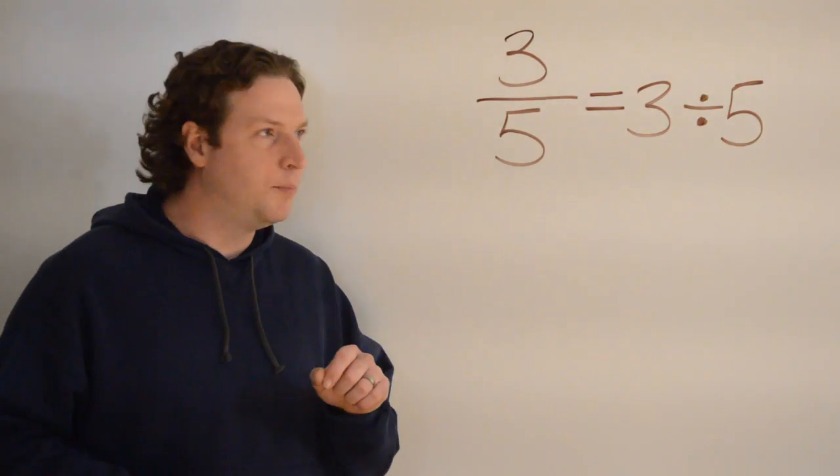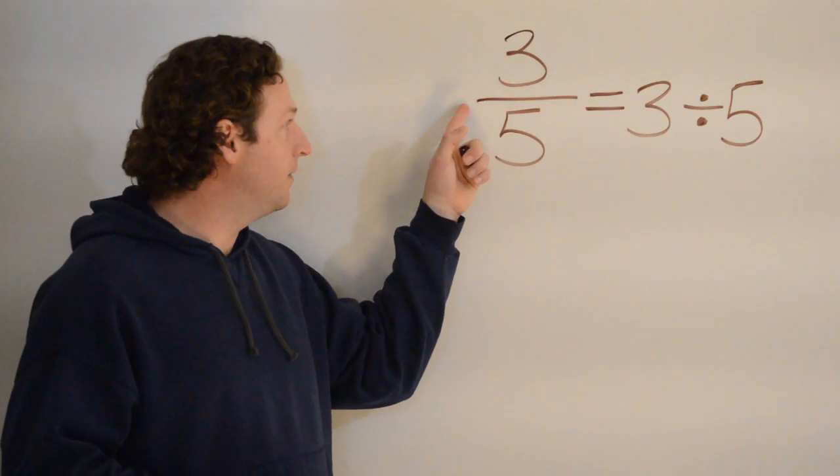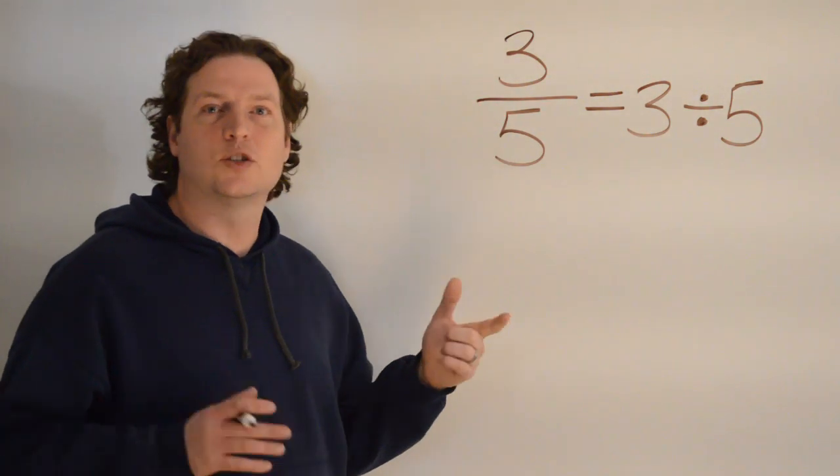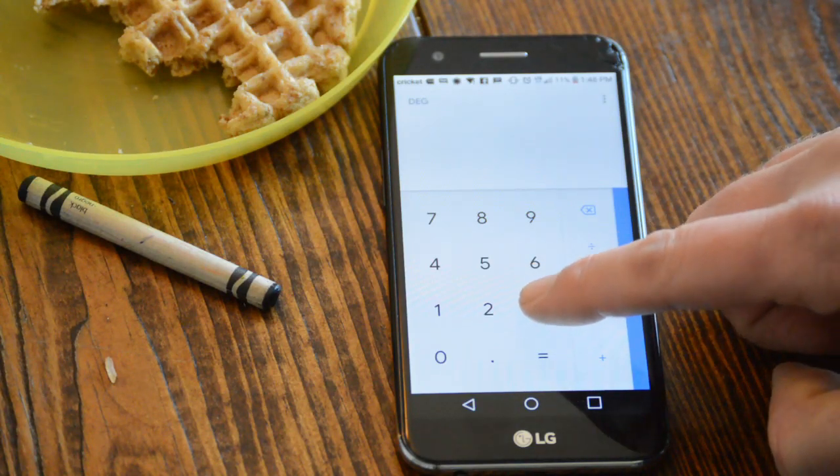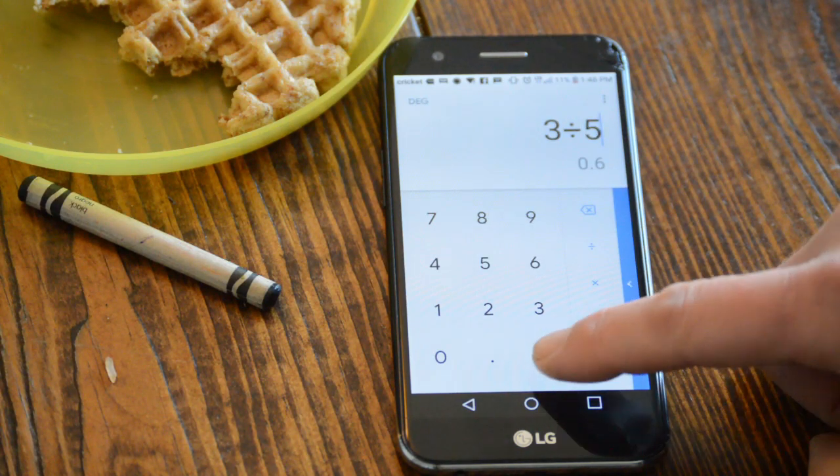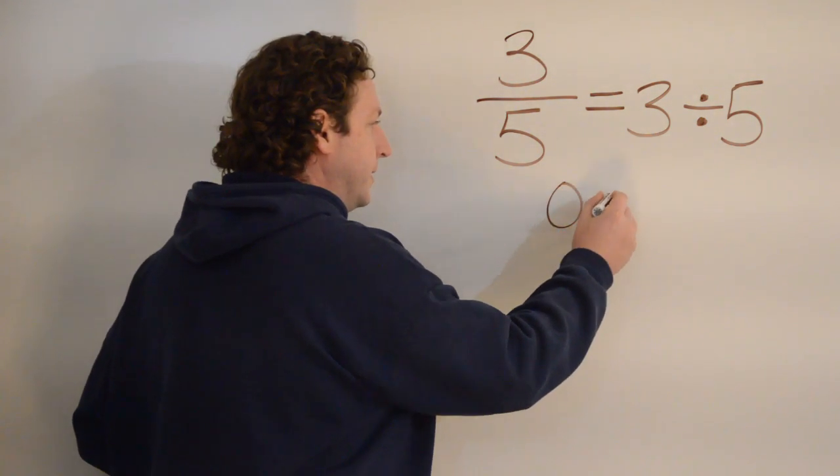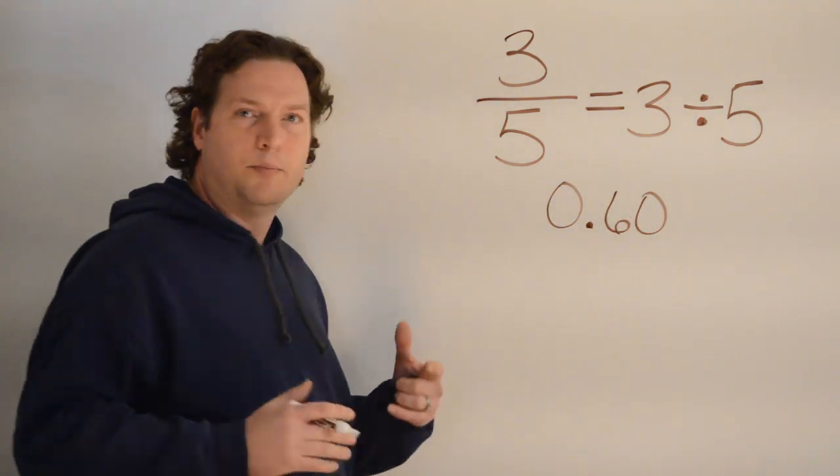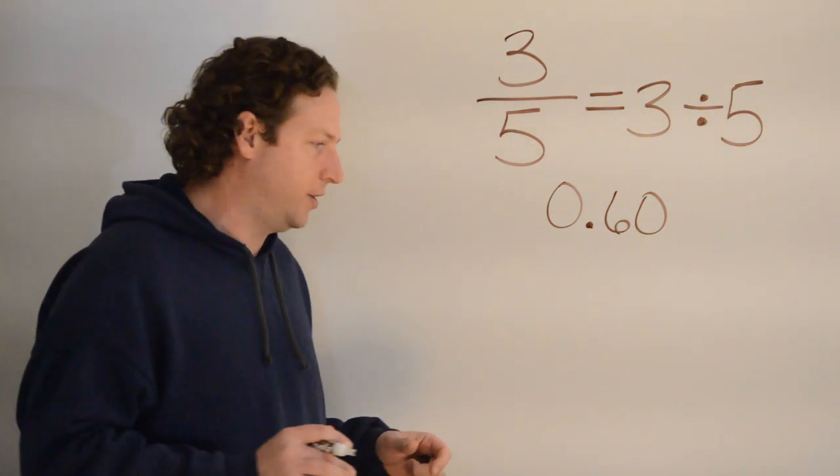Okay, let's try one more quick one. Three fifths, or three divided by five. Let's go ahead and put that in our calculator and see what we come up with. Okay, we can just do three divided by five, and we get zero point six. Good. Zero point six zero. Perfect. Let's test it in long division and see if we get the same answer.